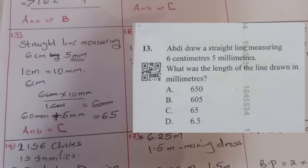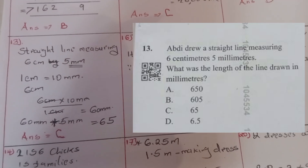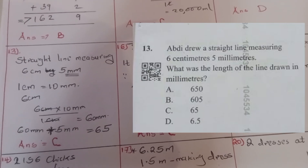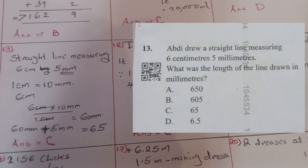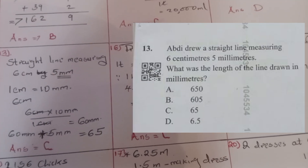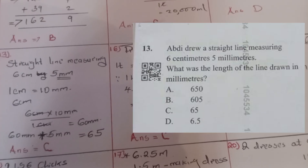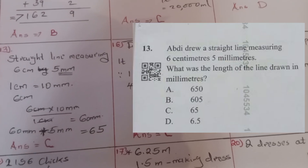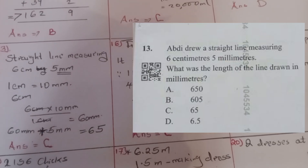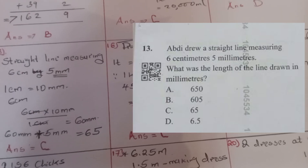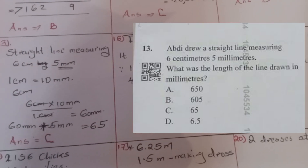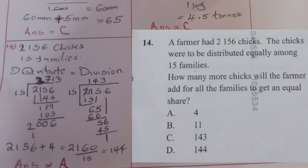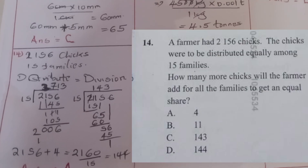Question thirteen: Abdi drew a straight line measuring 6 centimeters and 5 millimeters. What was the length of the line in millimeters? We convert centimeters to millimeters — one centimeter equals 10 millimeters, so 6 centimeters equals 60 millimeters. Adding 60 and 5 gives 65 millimeters. The correct answer was C.